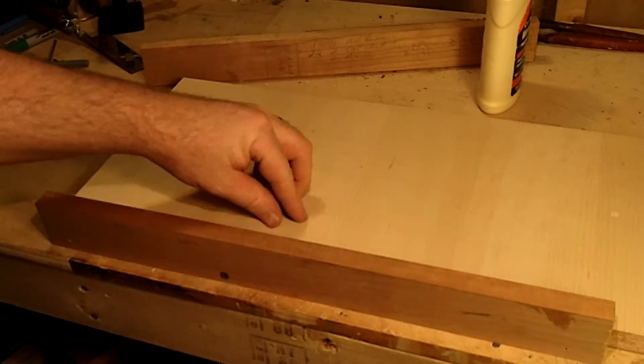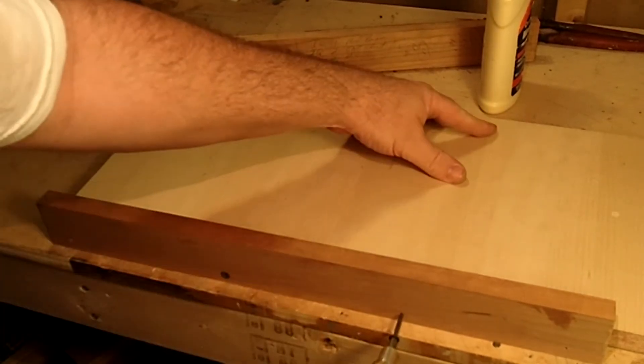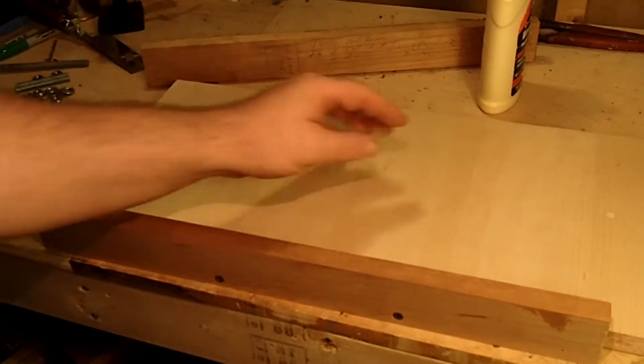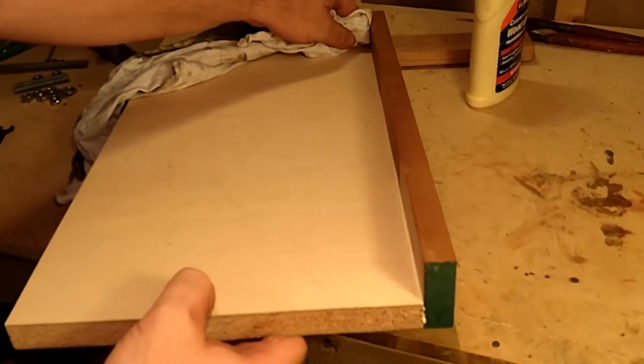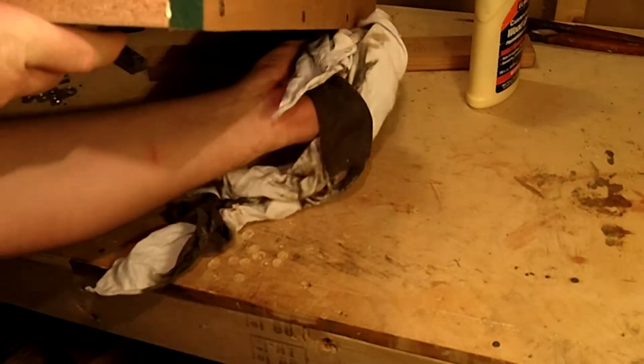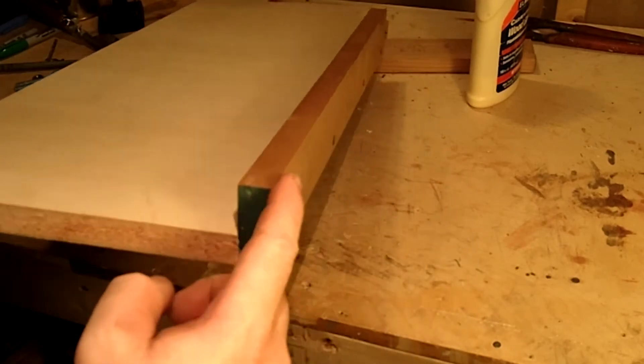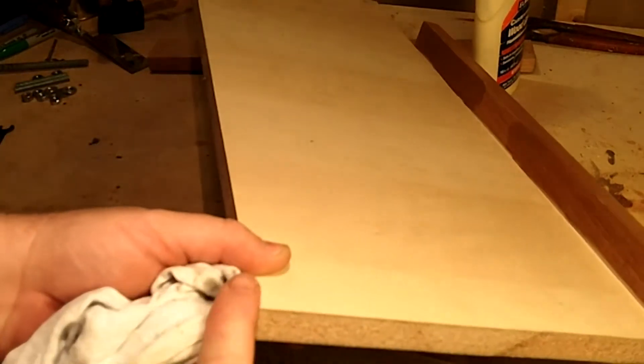And I put about four screws in each one. Depending on the size cradle you do, you might want more or less. Clean up any excess glue that you might have. And then do the same thing that you did here on the other side and let that dry.